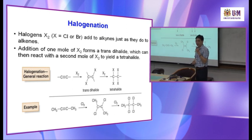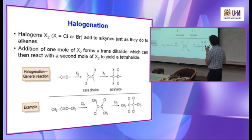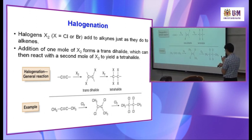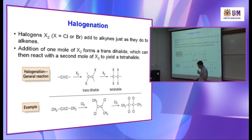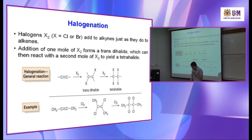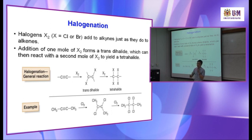What are the products? Anti-addition products. Halogen adds to alkyne just as it does to alkene. Addition of one mole of X2 forms a trans-dihalide — the reason is that this is anti-addition, as you just studied in the last chapter. The trans-dihalide can then react with a second mole of X2 to yield a tetrahalide.